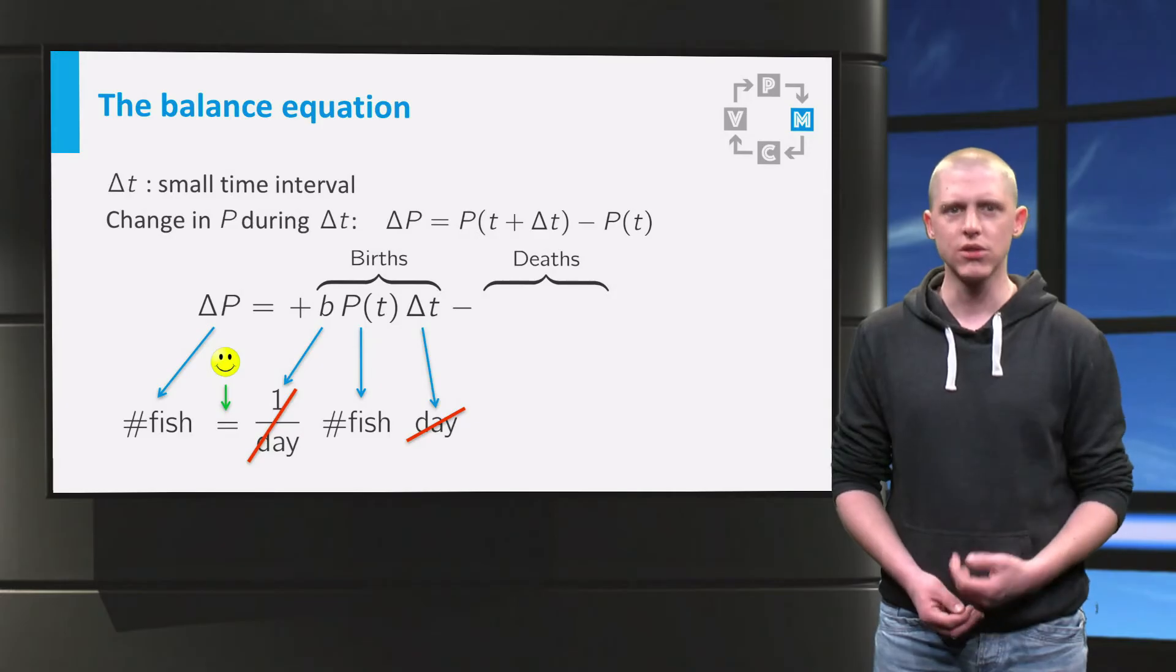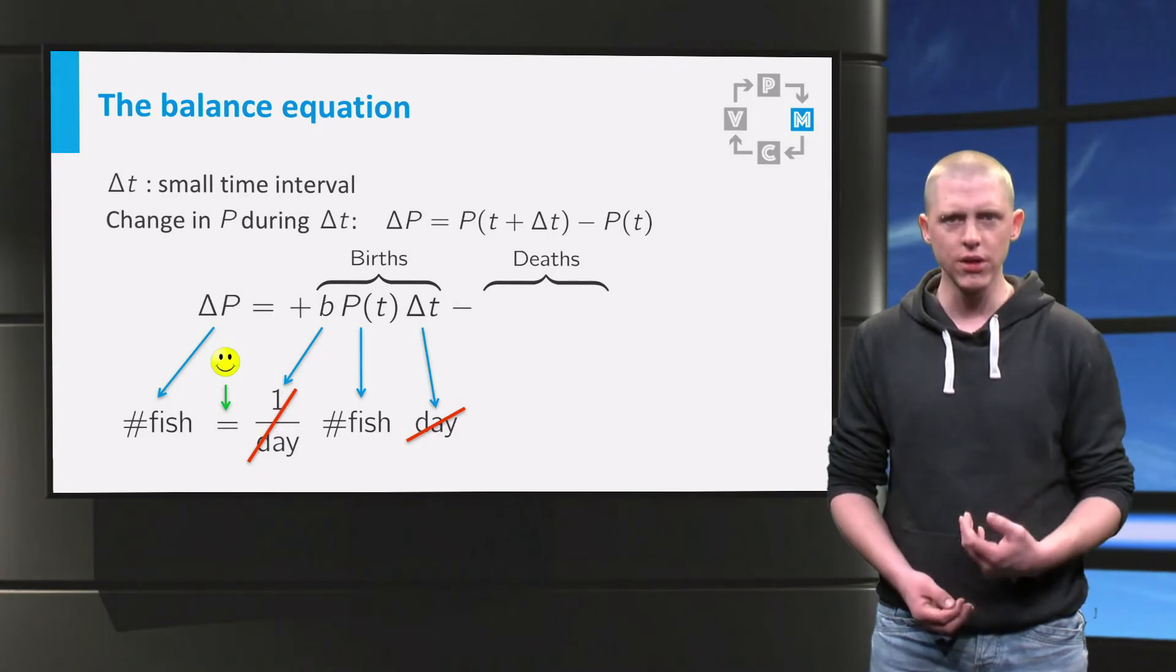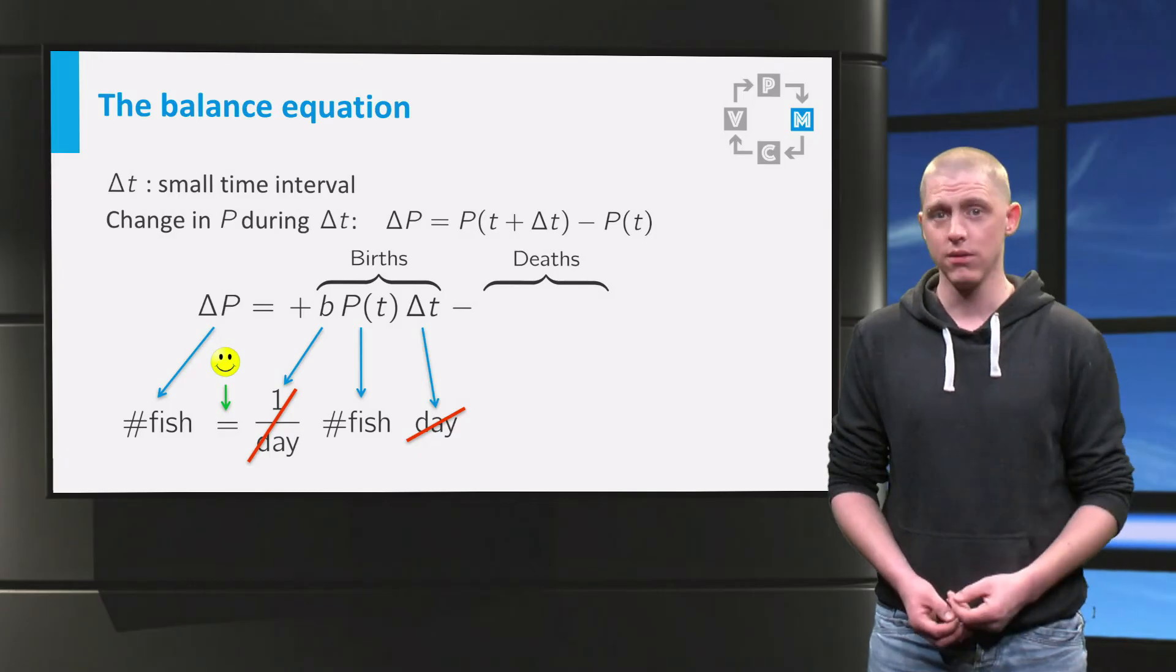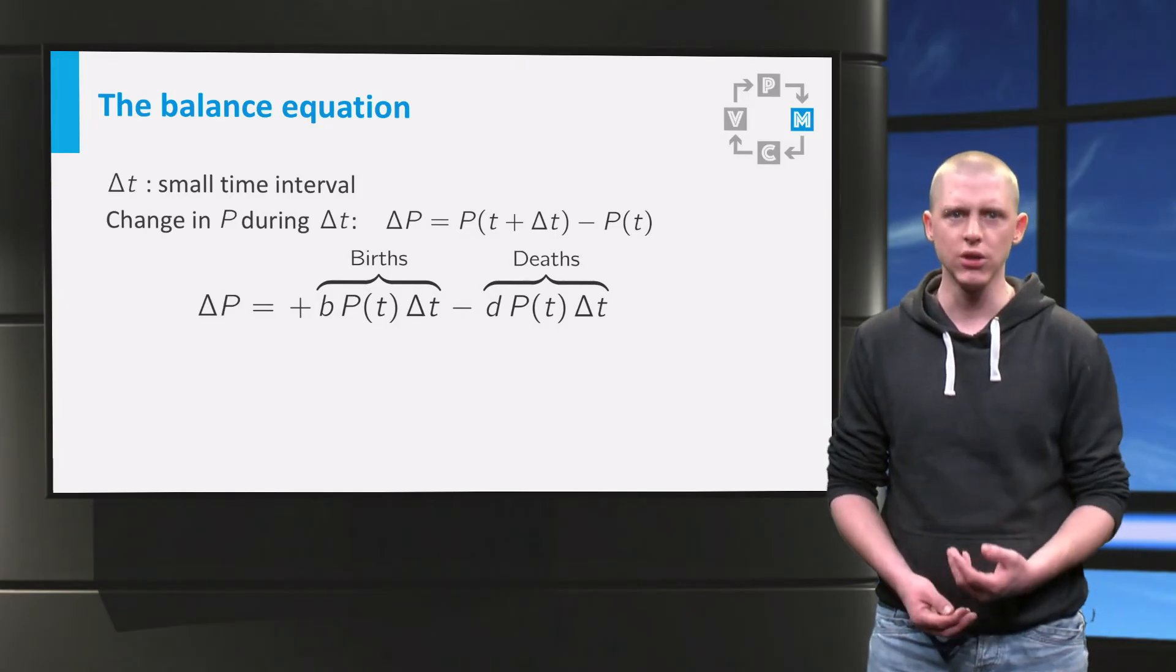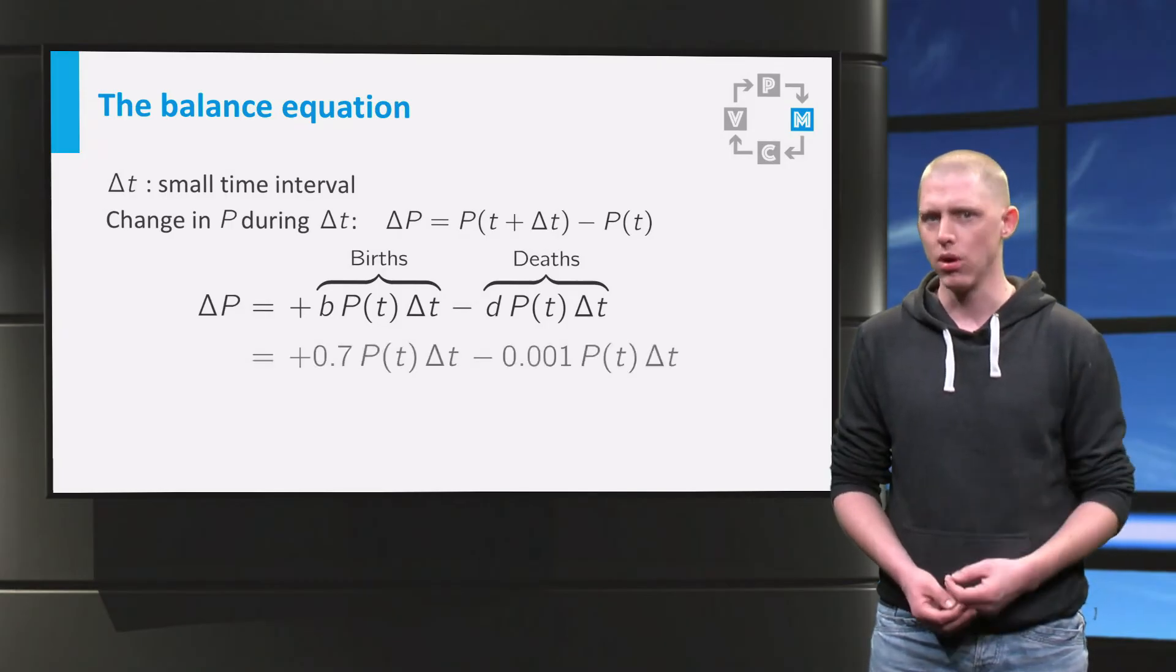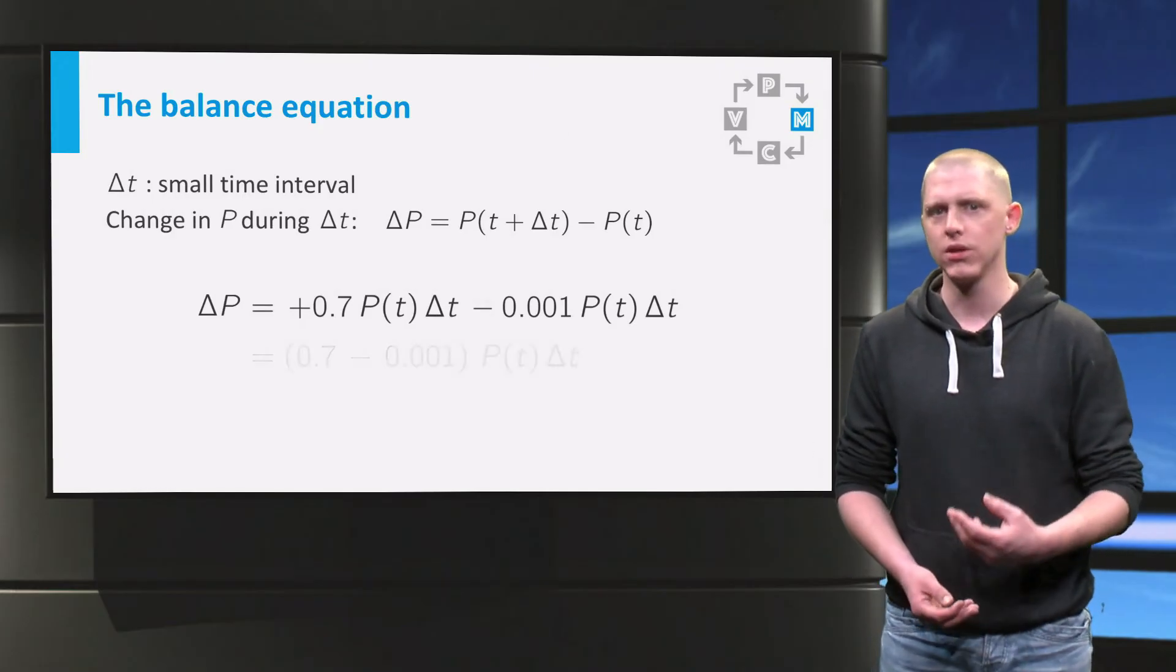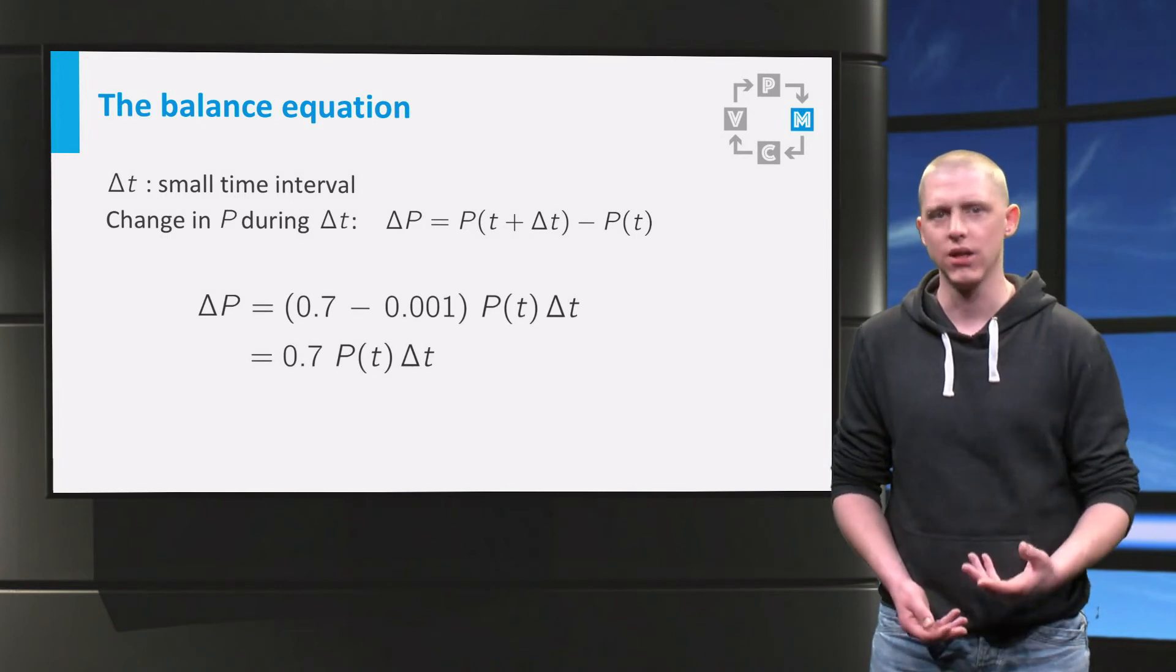In the same delta t days, a total of d times P times delta t die. So in total, during those delta t days, the population of rainbow fish grows by the amount b times P times delta t and decreases, and thus the minus sign, by d times P times delta t. Our equation thus becomes delta P equals 0.7P times delta t minus 0.001P times delta t. As the death rate is clearly much smaller than the precision of the birth rate, we will neglect it and approximate the difference by 0.7P times delta t. An equation such as this is called a balance equation.